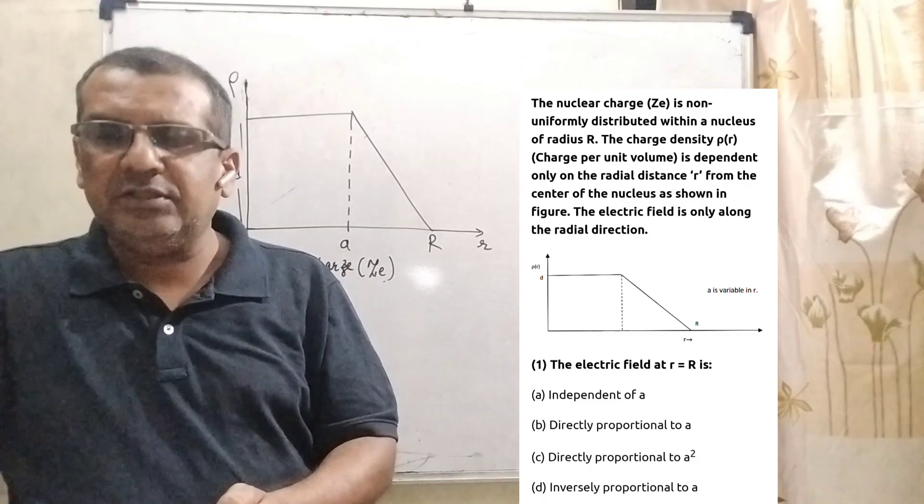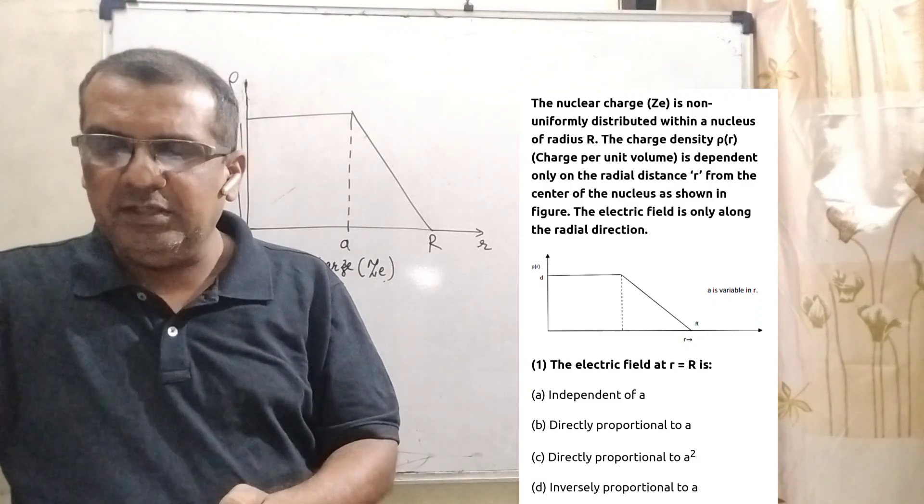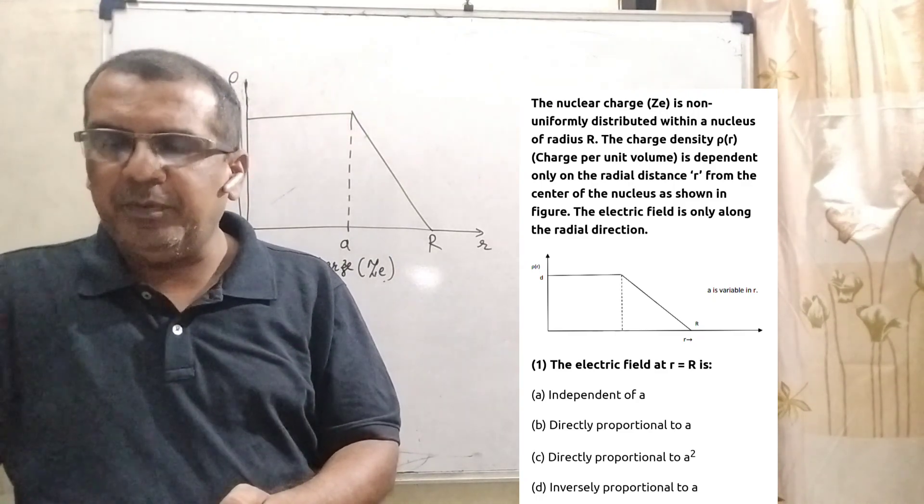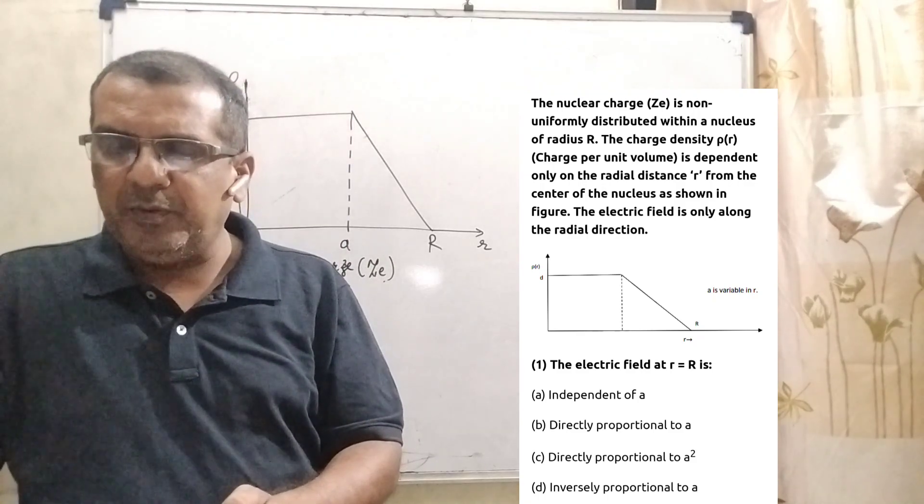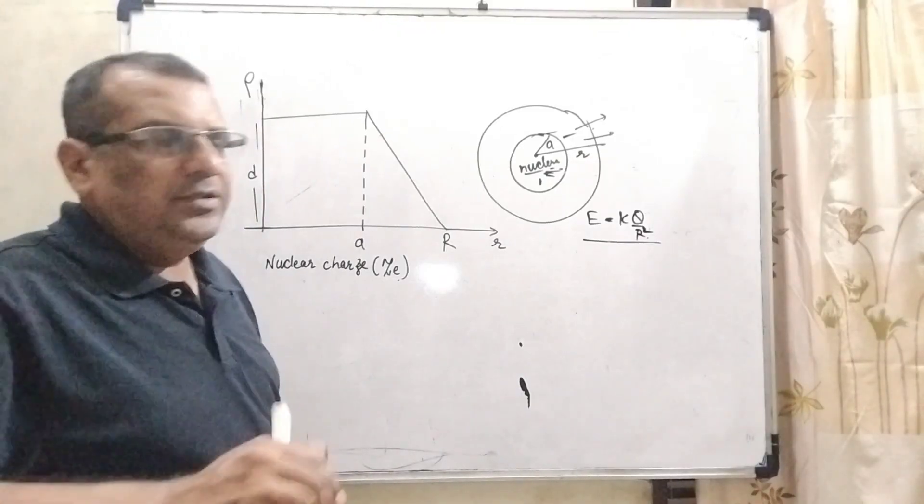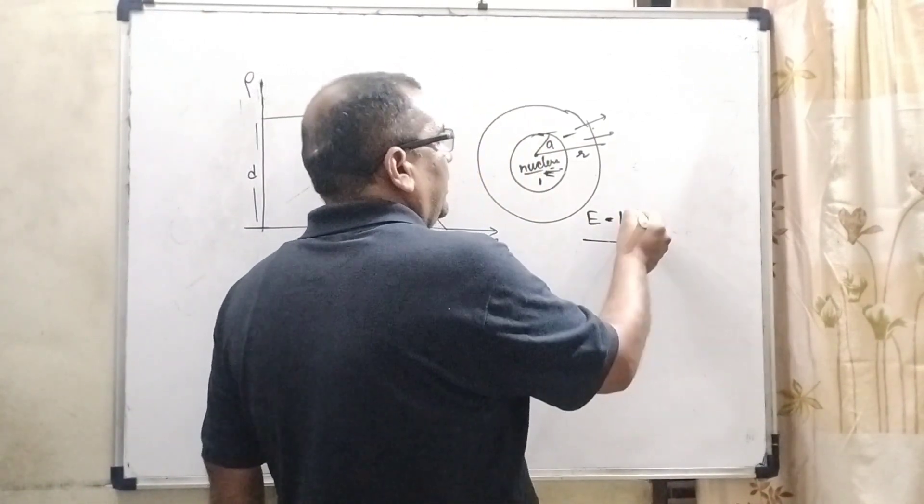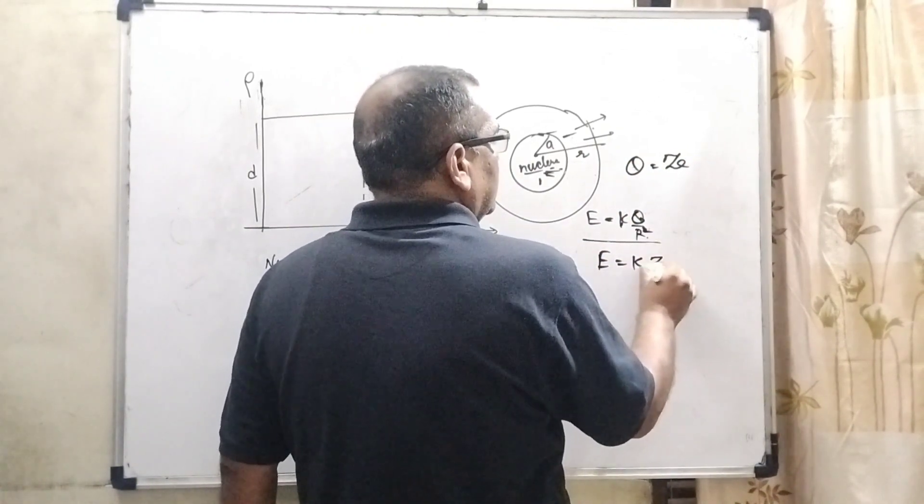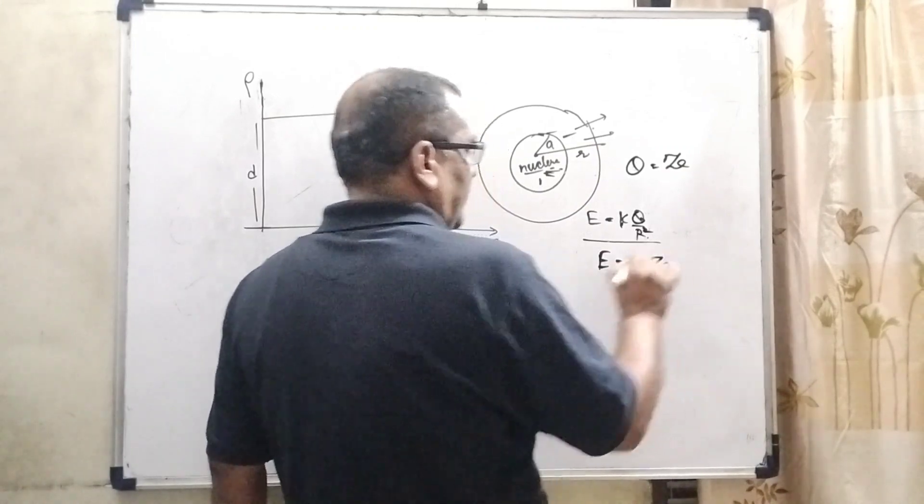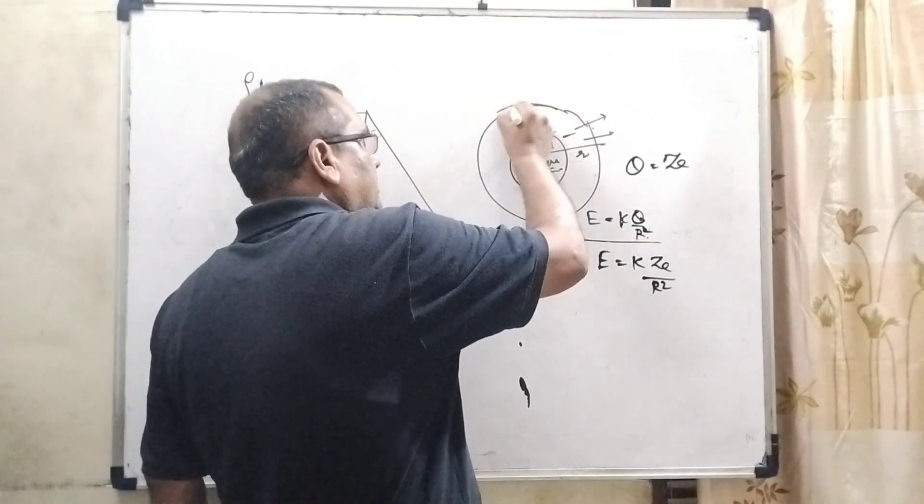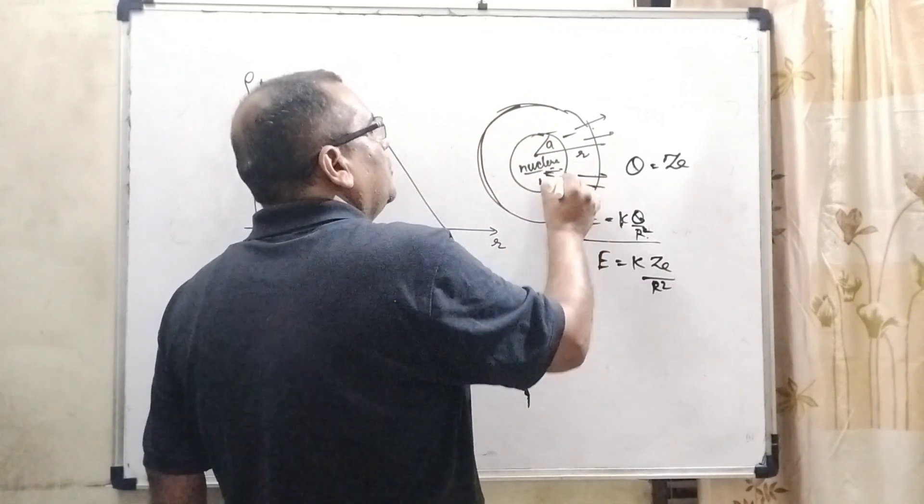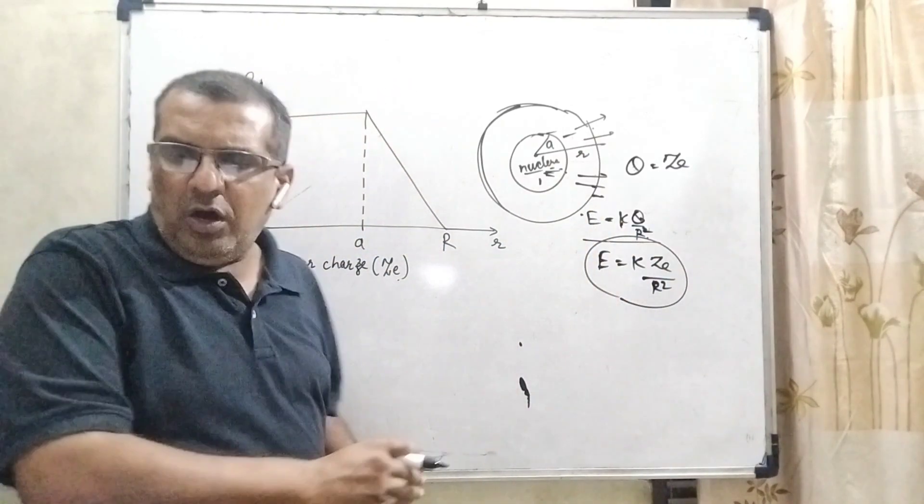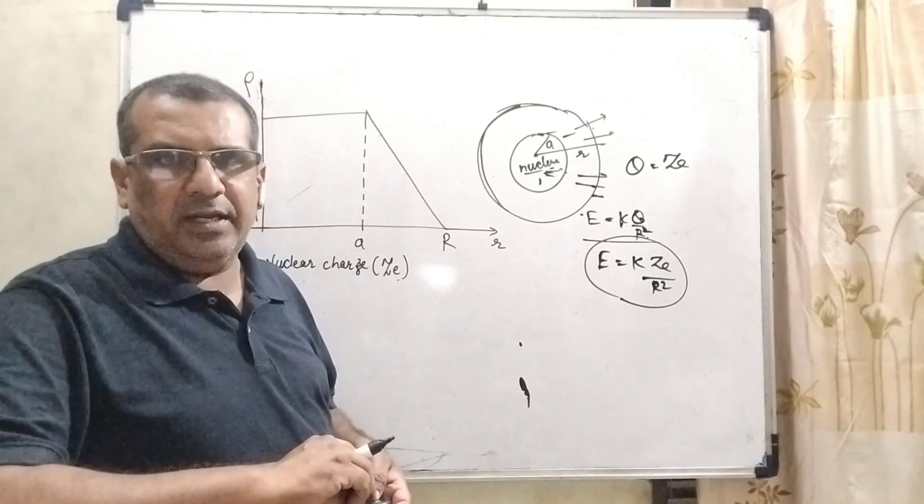According to this diagram, the first question is that the electric field at small r equal to capital R is: independent of A, option B directly proportional to A, option C directly proportional to A square, and inversely proportional to A. As we know that the electric field is equal to K Q by R square. Here Q is total charge, that is given as ZE. Total charge ZE and the radius is R square. The whole charge is accumulated on the surface due to this nucleus. Therefore, that is independent of A. So here, option A, independent of A, is the correct answer.